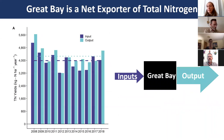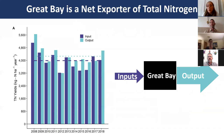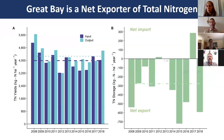The first result is that Great Bay is a net exporter of total nitrogen—meaning inputs are less than outputs. A figure showing total nitrogen yield normalized by Great Bay's surface area at mean high tide demonstrates that purple bars representing inputs are lower than blue bars representing outputs, and on average across the 10-year period, output exceeds input. The delta storage term shows that the majority of years exhibit net export.